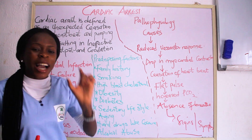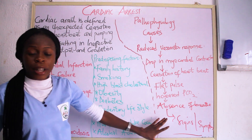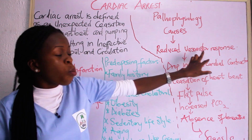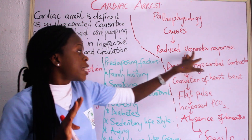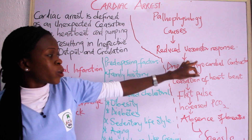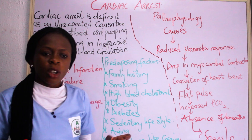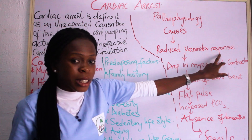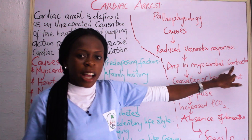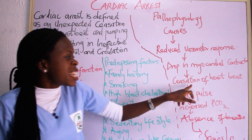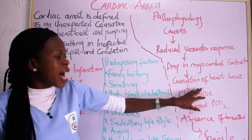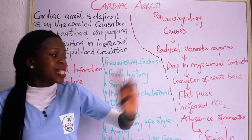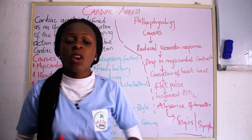The pathophysiology of cardiac arrest: there is reduced vasomotor response — that is, the vessels sending messages. This reduced vasomotor response leads to a drop in myocardial contraction. The ventricles then fail to pump blood into circulation. A drop in myocardial contraction leads to cessation of the heart. When cessation of the heart occurs, there is a flat pulse, increased PO2, PCO changes, and absence of breath, resulting in the various signs and symptoms of cardiac arrest.